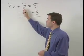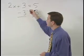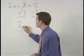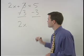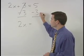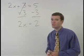On the left, plus 3 minus 3 cancels and we're left with 2x. On the right, 5 minus 3 simplifies to 2.